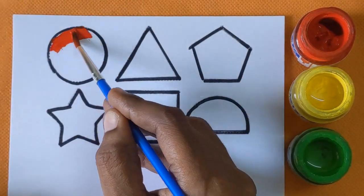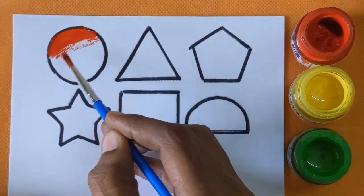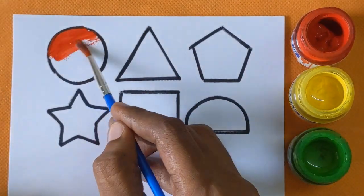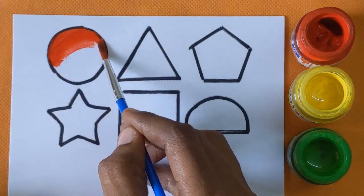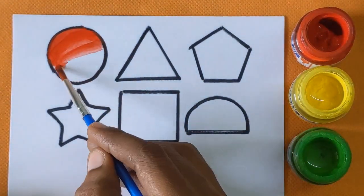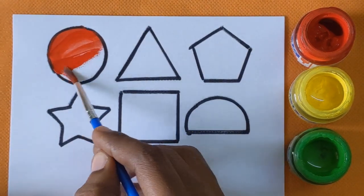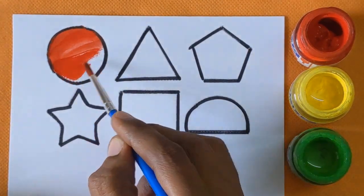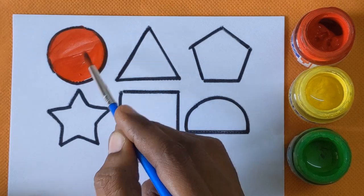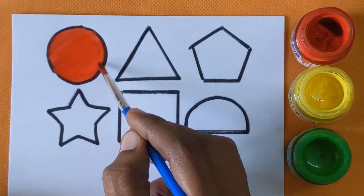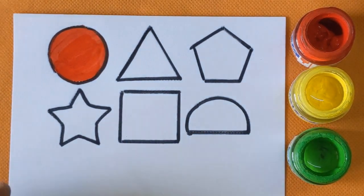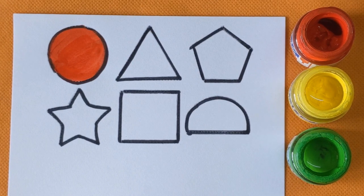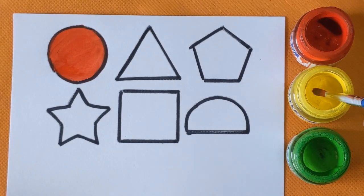Circle shape with a red color. This is circle shape with a red color. Next is triangle.